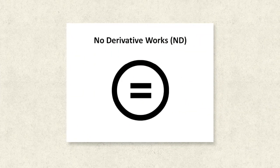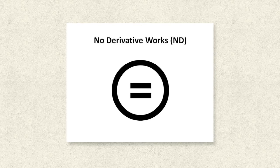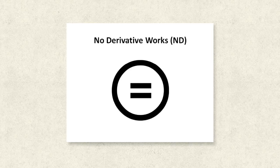By conditioning the CC licence with no derivative works, a copyright owner can prevent their work from being adapted or changed in any way.